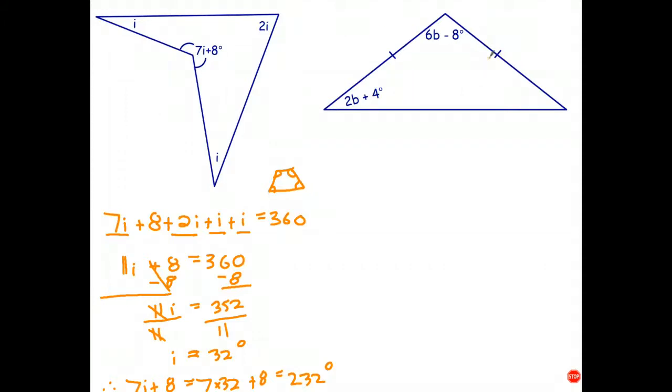Now, because we have these two ticks there, that means this is an isosceles triangle. And it means we can write 2b plus 4 down there. I'll try to write that a bit more neatly as well. 2b plus 4. Okay, all the angles of a triangle add to 180. So we can say 6b take 8 plus 2b plus 4 plus 2b plus 4. All of that adds to 180.